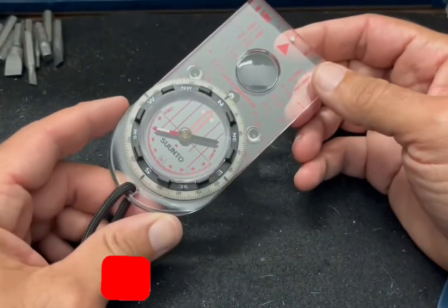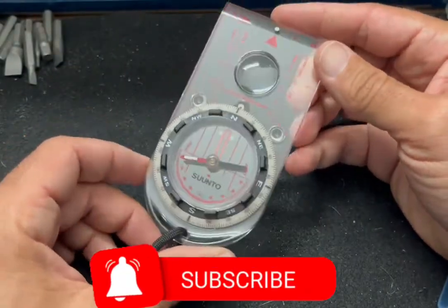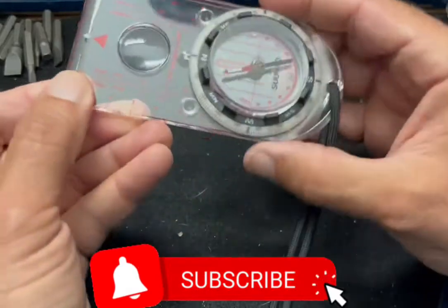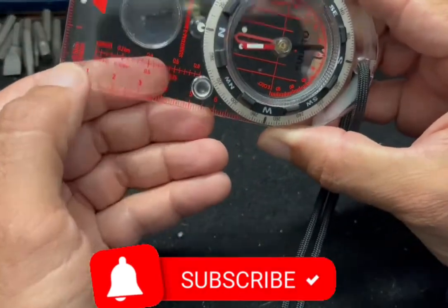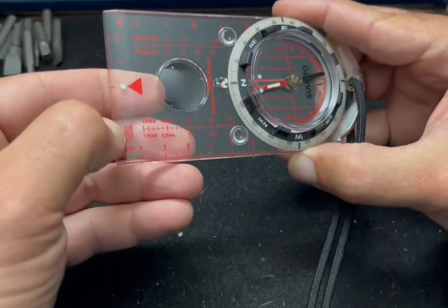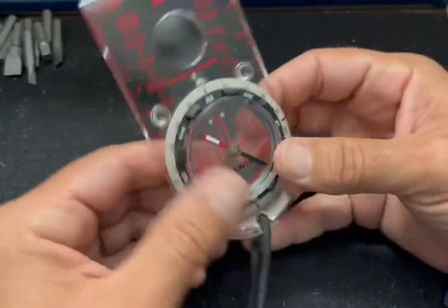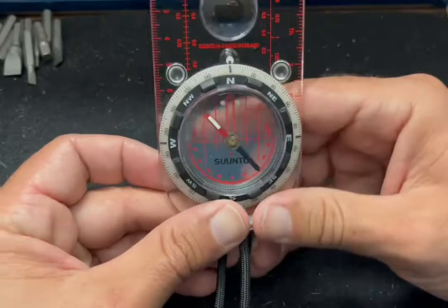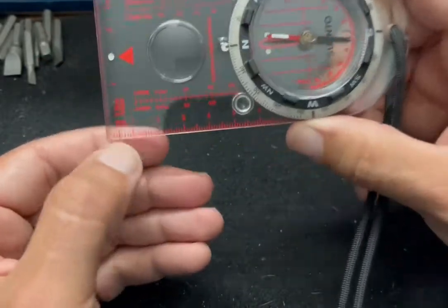This compass also has three measuring rulers. Here is one, here is another one, here is another one.